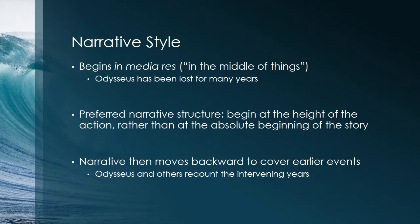Ancient literary critics called the narrative style of the Odyssey, as well as the Iliad, in media res, which is a Latin phrase meaning 'in the middle of things.' This was considered a better narrative structure — it begins at the height of the action. Rather than starting at the end of the Trojan War and recounting all of Odysseus's journey, it begins after he's already been lost for many years, when he's just about to begin his final leg home. Then it moves backwards to cover earlier events. You'll see this style in many narratives that follow Homer.